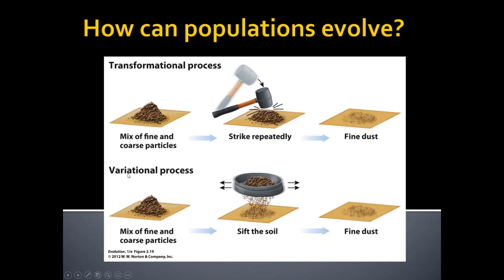The second type of change is a variational process. A variational process does not change the individual elements of the population — it's more of a screening process. In the analogy, we use a sifter to screen out the small elements and separate them from the larger ones. We didn't change any of the gravel into smaller things; we just took what was already there and separated it out. The end result looks similar, but it's fundamentally different from transformation.